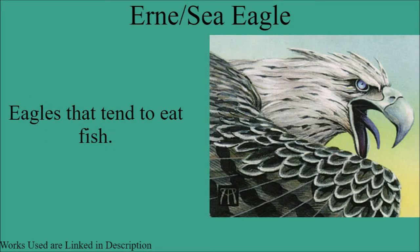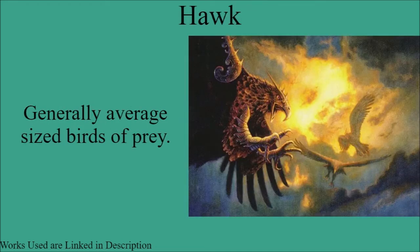Next up are the urns, or sea eagles, and these are eagles that tend to eat fish. They can eat other things, but fish tend to be the main thing. Next up are hawks, and these are typically average-sized birds of prey. Hawk just tends to be a general term used for a generally average-sized bird of prey that is an accipitriforme.